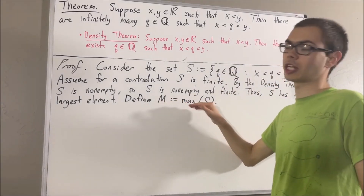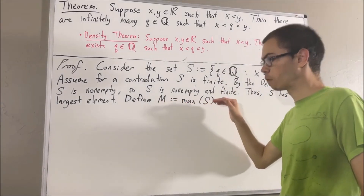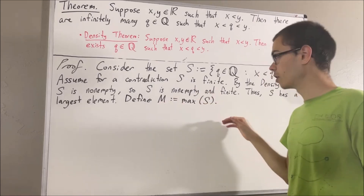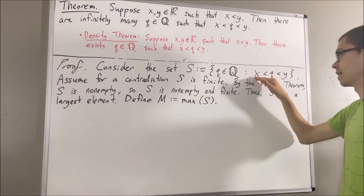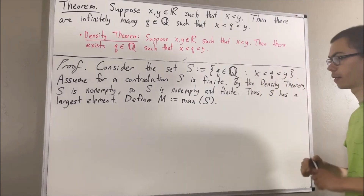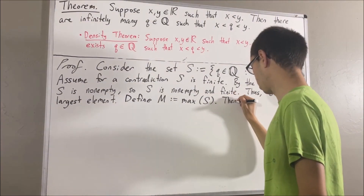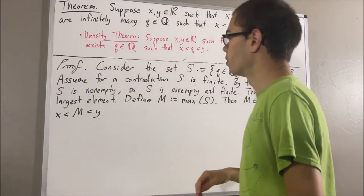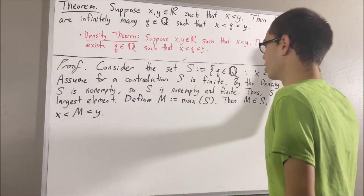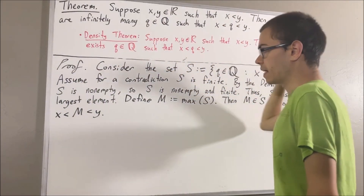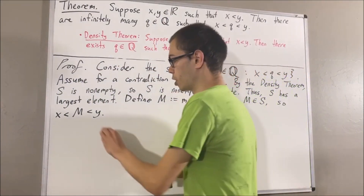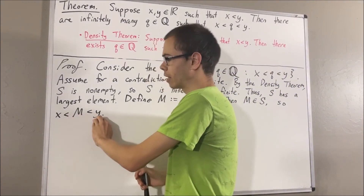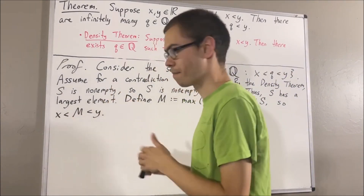Since capital M is the largest element of S, of course capital M is an element of S. So we have that x is less than capital M is less than y. But by the density theorem, there must exist a rational number between capital M and y. I'll call that rational number capital M prime.